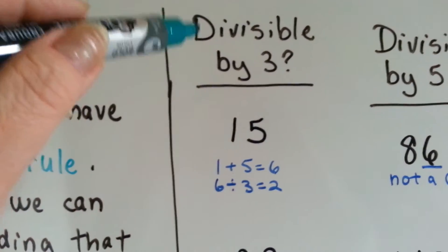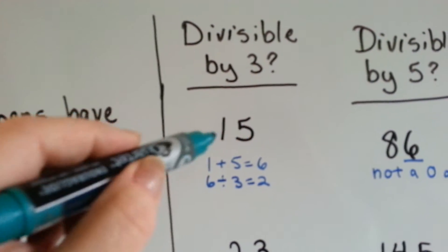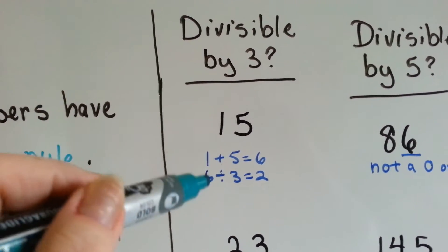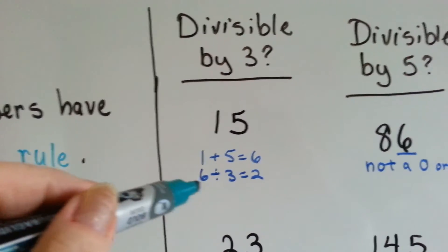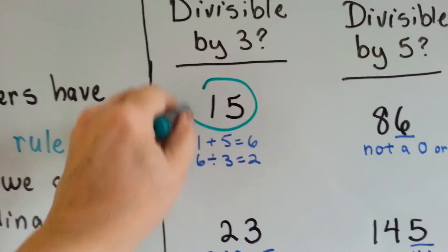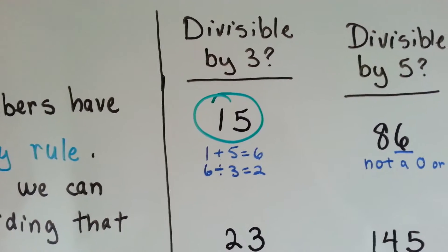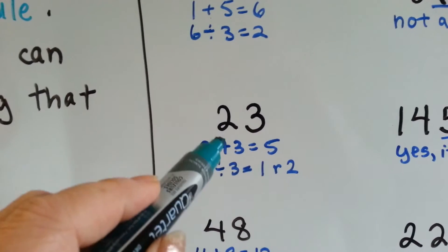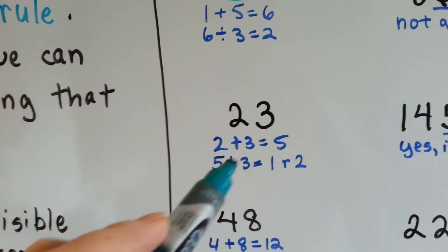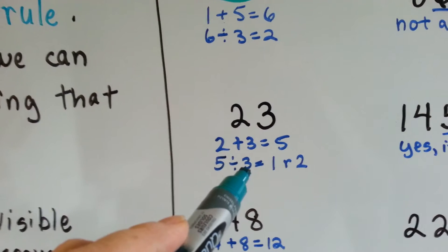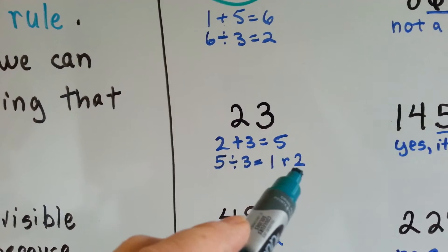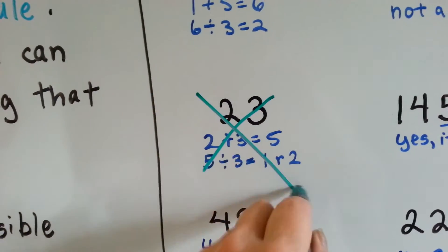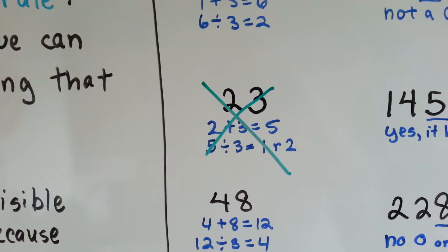Is 15 divisible by 3? Remember, we're supposed to add these two numbers together: 1 plus 5 is 6. Can you divide 6 by 3? Yeah, 6 divided by 3 is 2. So 15 is divisible by 3. How about 23? Add the 2 plus the 3: 2 plus 3 is 5. 5 divided by 3 is 1 with a remainder of 2 — it's got to have a remainder of 0. So 23 is not divisible by 3.